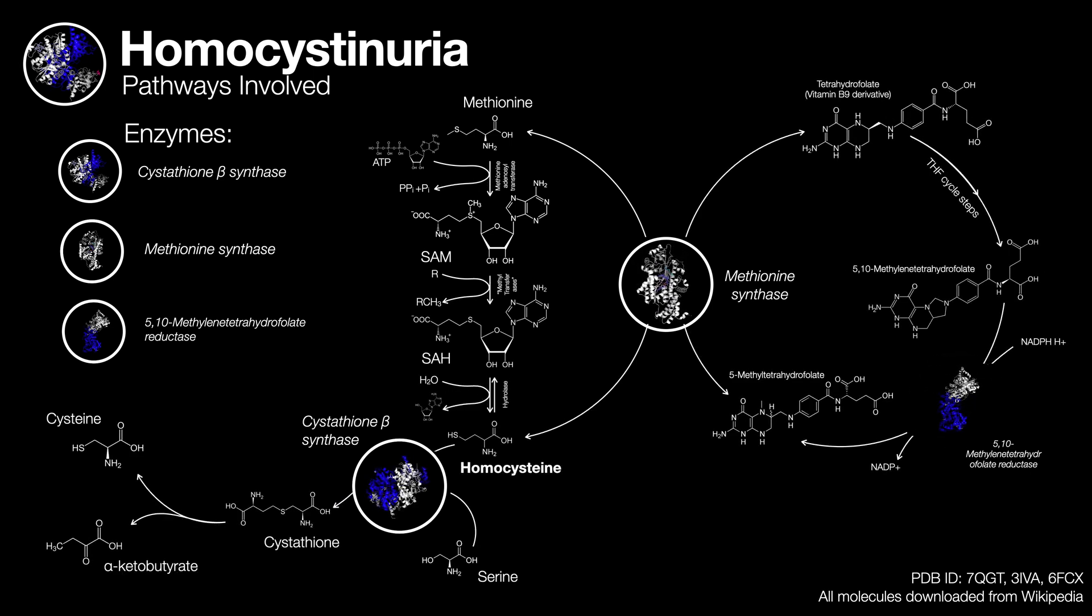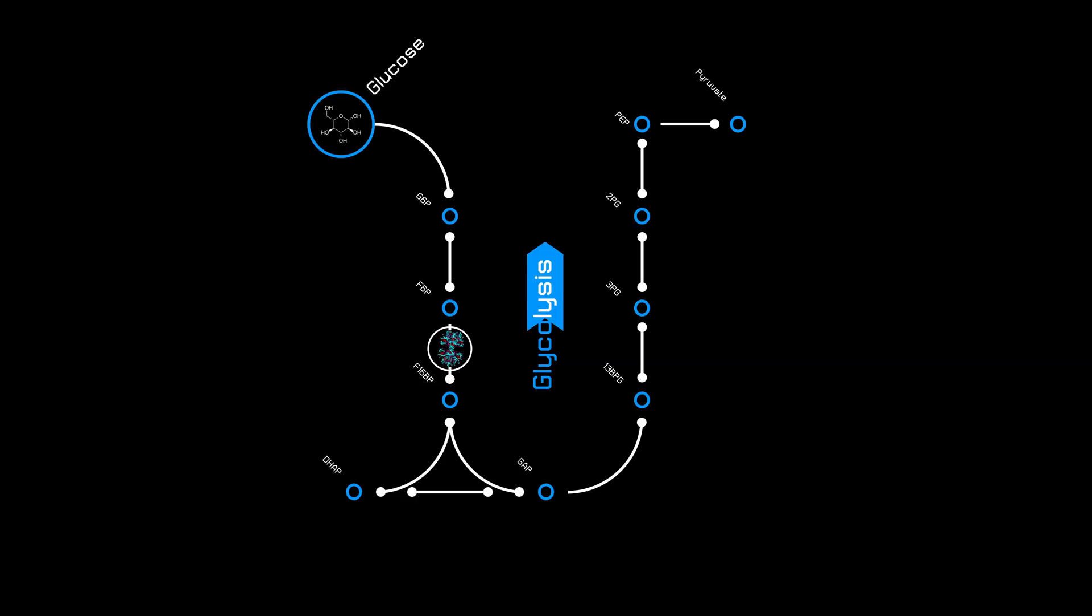Fructose is able to evade a very important enzymatic step. The speed of glycolysis is mainly controlled using an enzyme known as PFK.